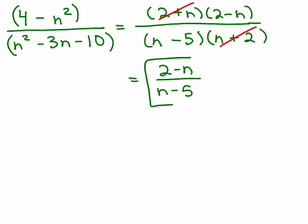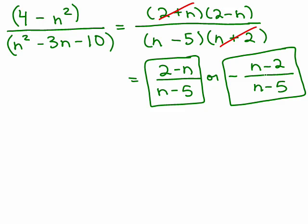So I've got 2 minus N over N minus 5. Now, you might see someone write this differently. They might factor a minus sign out of the top and just put it in the front, and then that would be N minus 2. Now, remember, when there's a minus sign out in front of a fraction, you either put it with the numerator or the denominator. You don't do it with both, because then you'd be multiplying by a negative 1 and another negative 1, so the answer wouldn't be negative anymore. So just as a reminder.